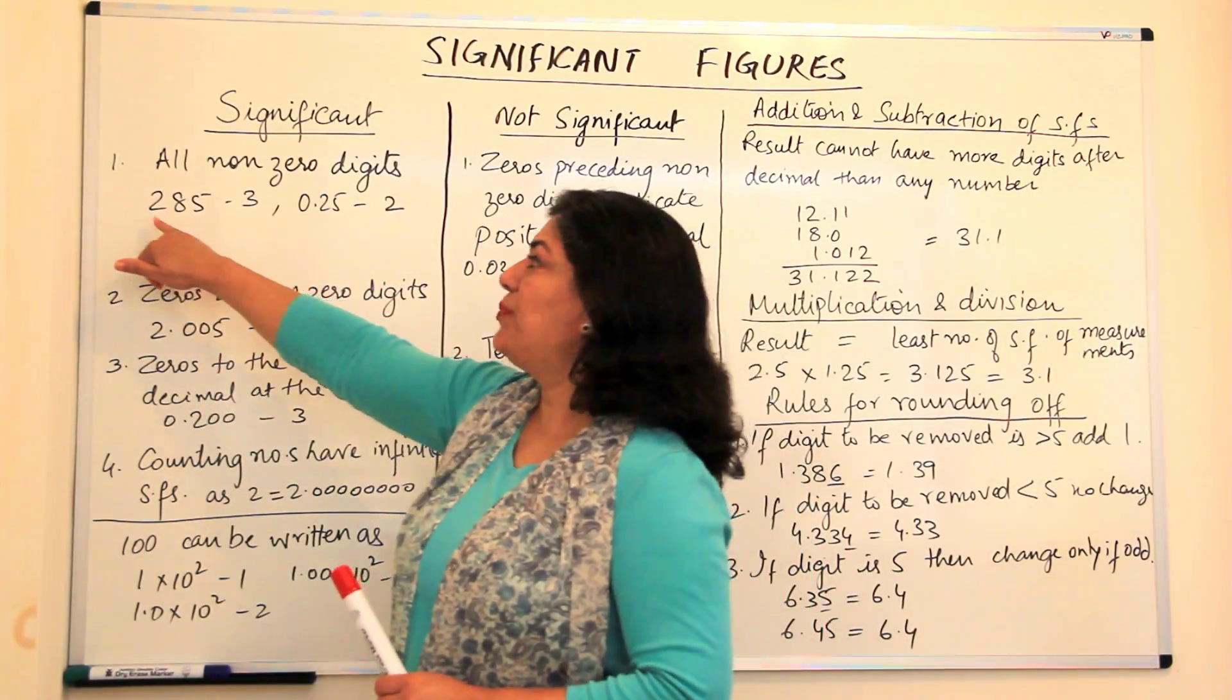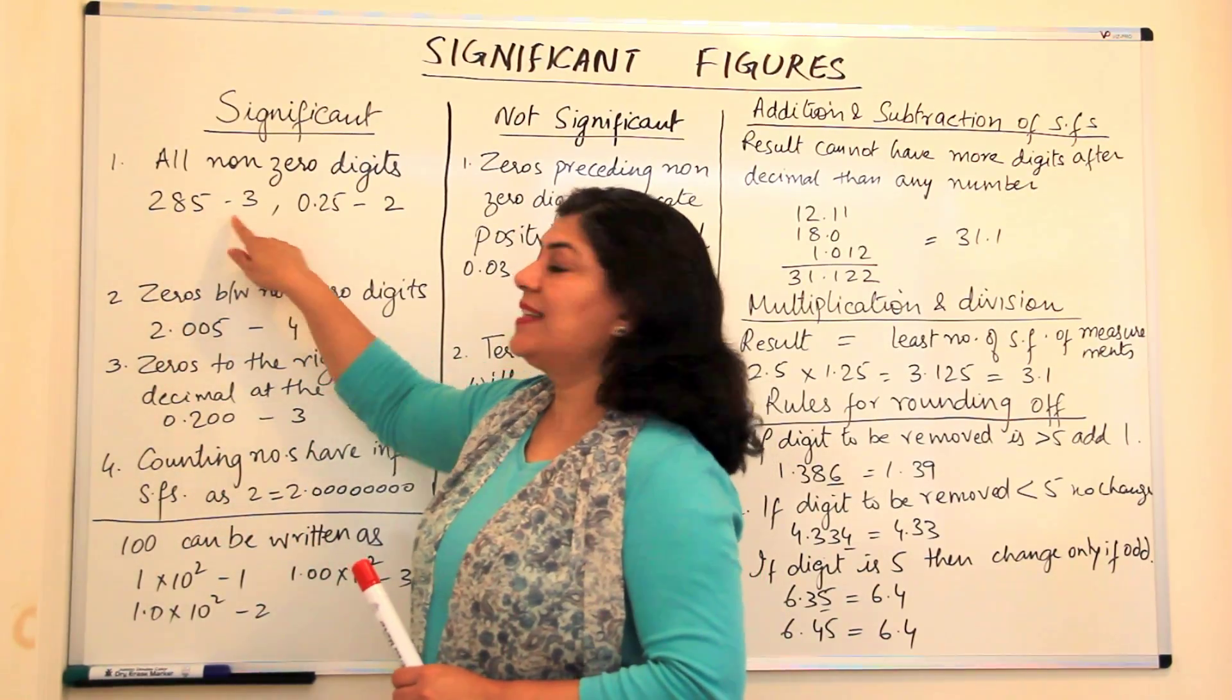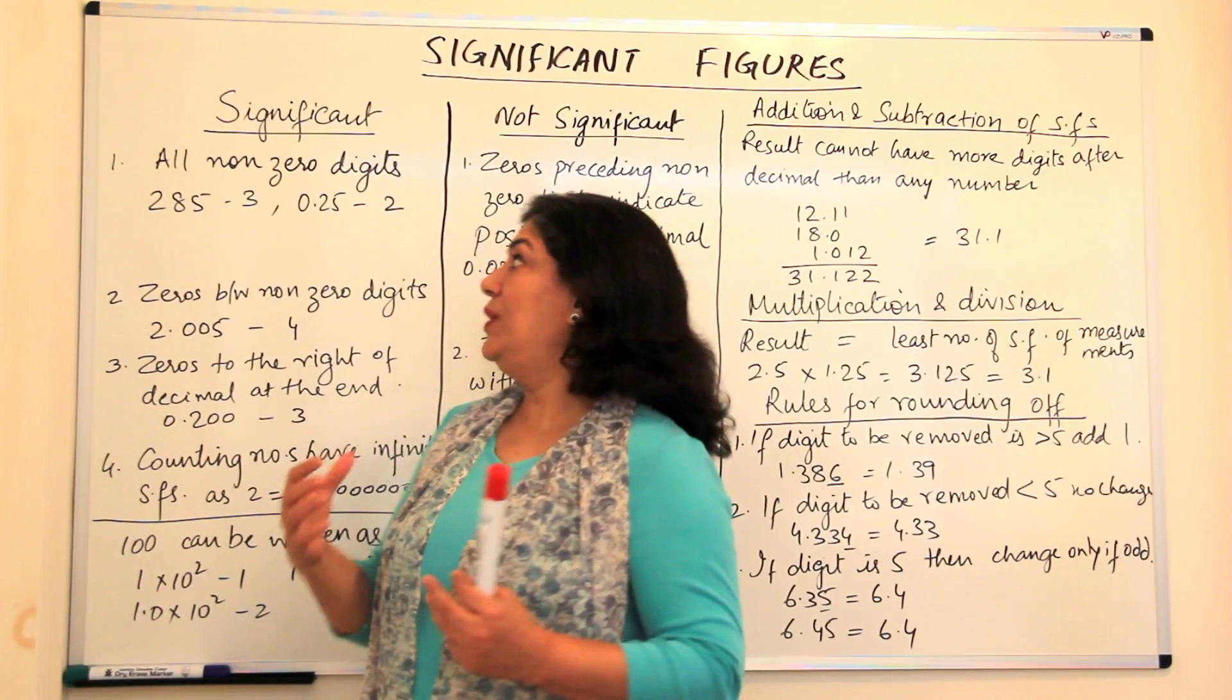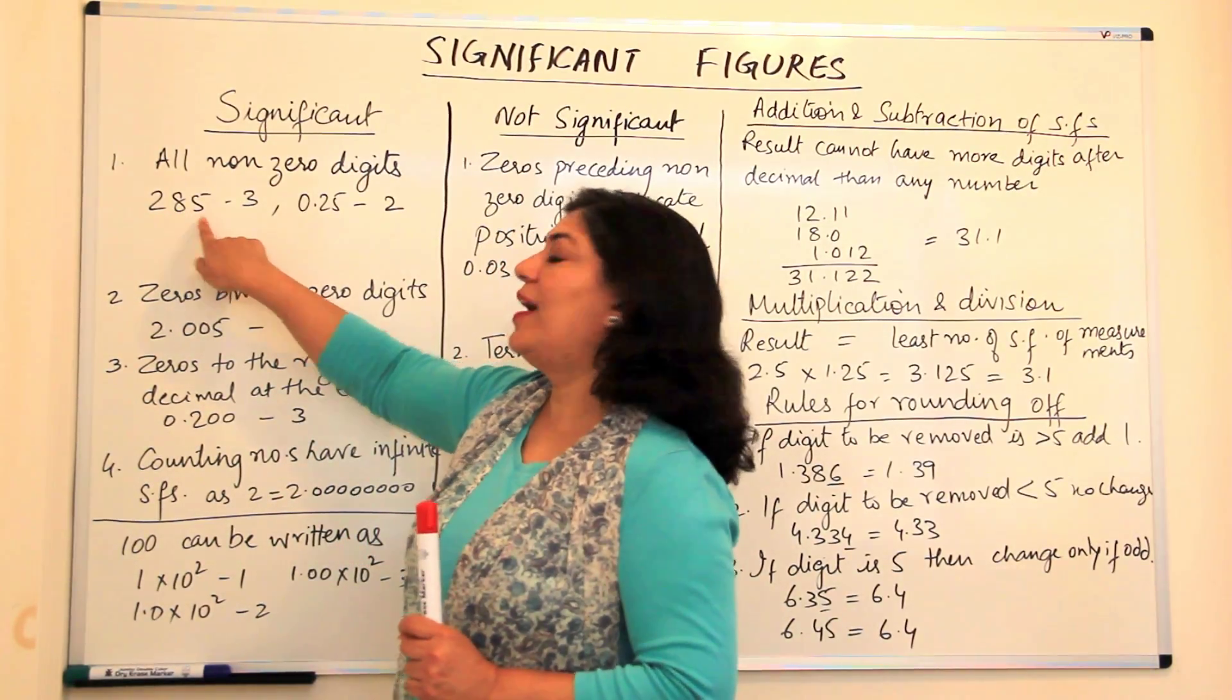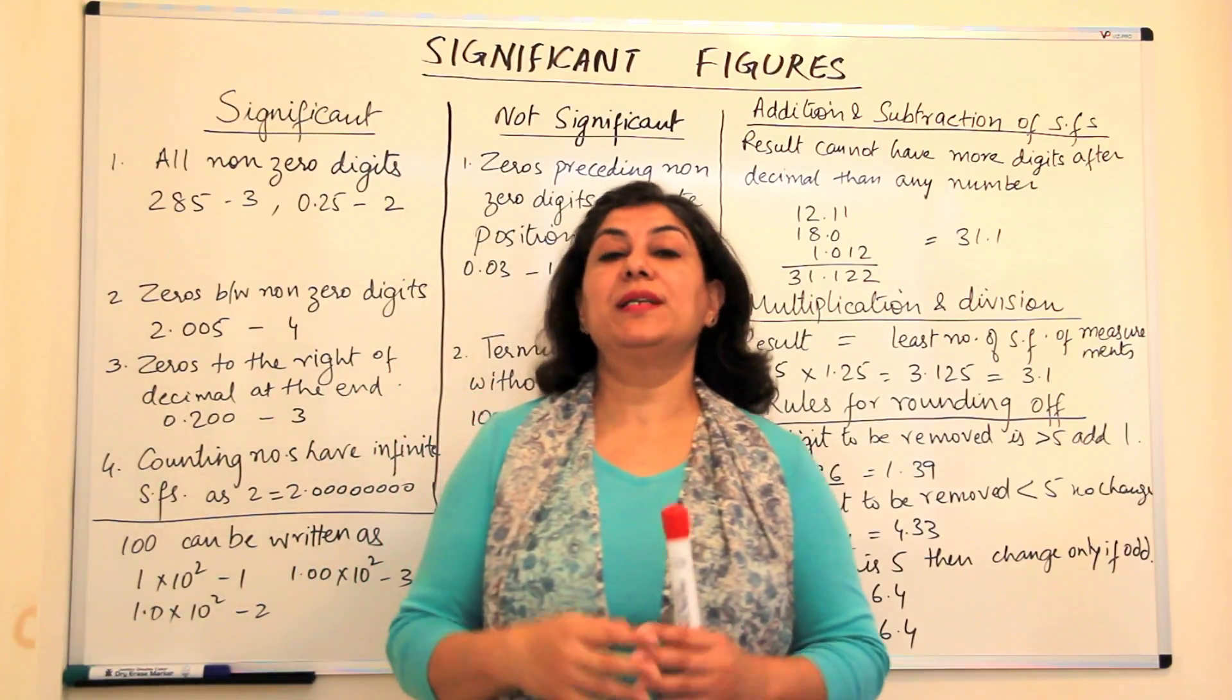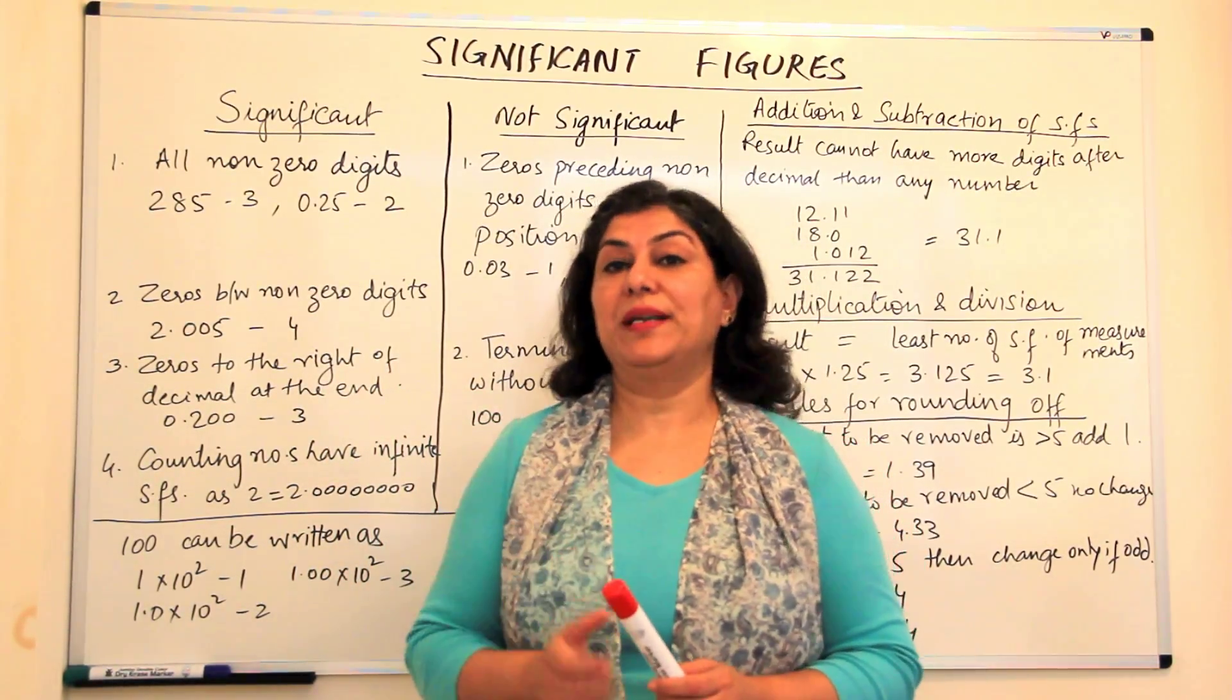For example, if my measurement is 285, then this has three significant figures, which we say that 280 are accurate, but the 5, the last digit in a measurement, has the possibility of an error of plus minus 1.